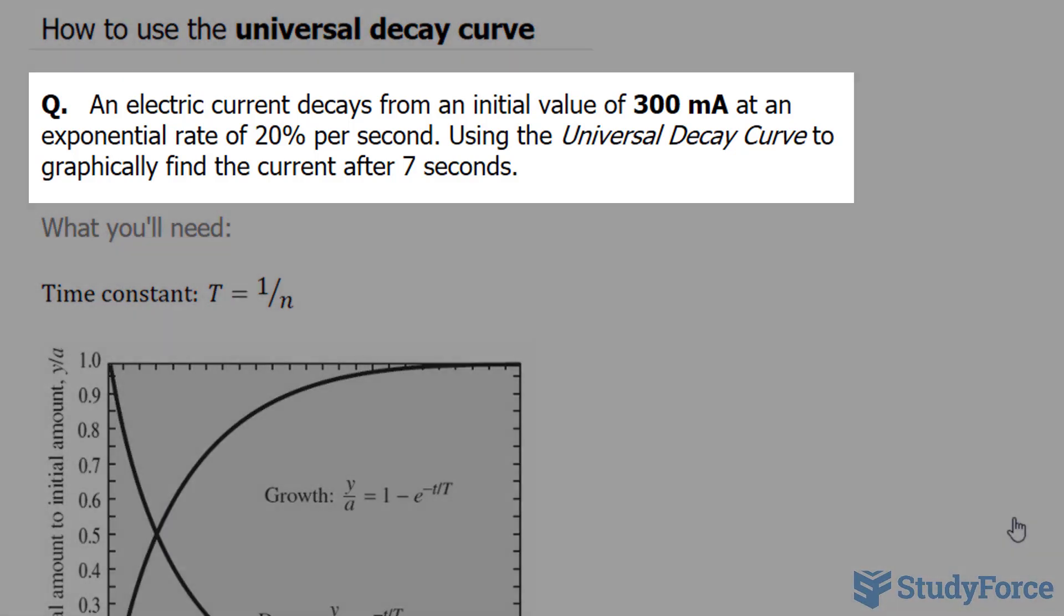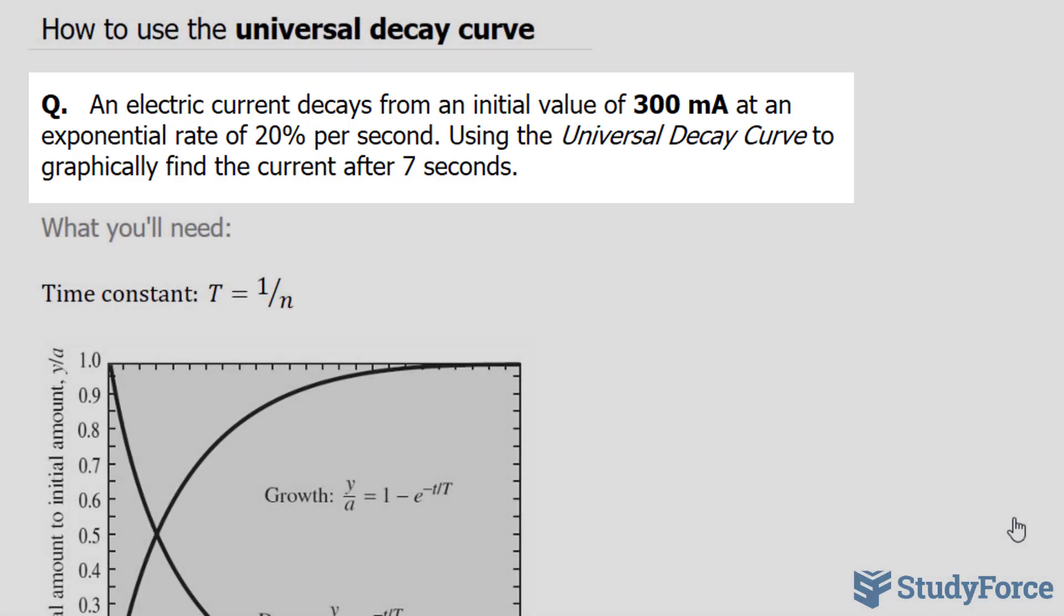The question reads: an electric current decays from an initial value of 300 milliamps at an exponential rate of 20% per second. Use the Universal Decay Curve to graphically find the current after 7 seconds.